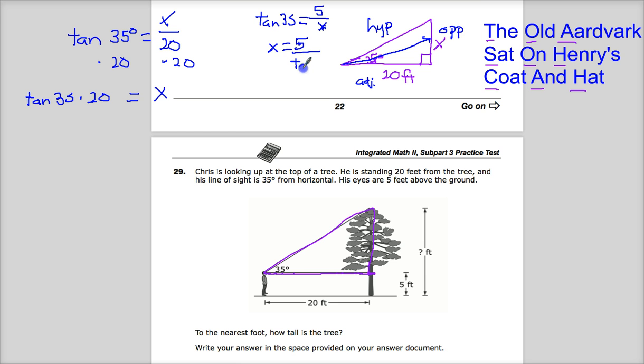Again, that doesn't apply here. But when you get to the test, I'm sure that on occasion, they will give you ones that do that. Because that's the kind of thing test makers do. Anyway, let's get over to tangent 35 times 20 and get this one done.